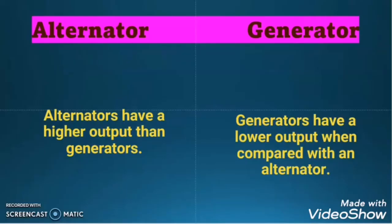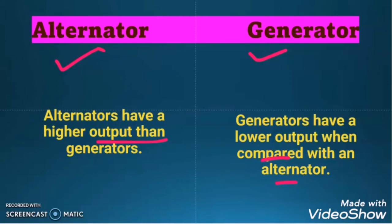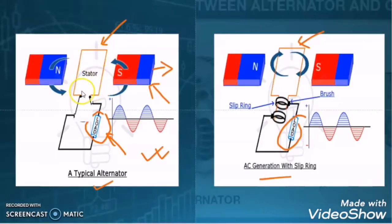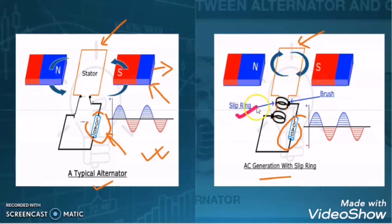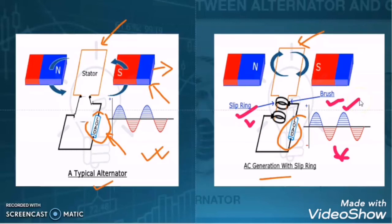Another difference between alternator and generator is that the output of the alternator is greater than that of the generator — the generator's output is comparatively less. The reason is that in case of an alternator we are getting the power supply through the armature which is stationary, so we do not require any carbon brush and slip ring arrangement. But in case of a generator, we are getting power supply through the armature which is rotating, so we need a slip ring and carbon brush arrangement, which reduces the output of the generator. In electrical engineering, wherever you use the slip ring and carbon brush arrangement, you are compromising with the output, decreasing the efficiency, and increasing the maintenance.